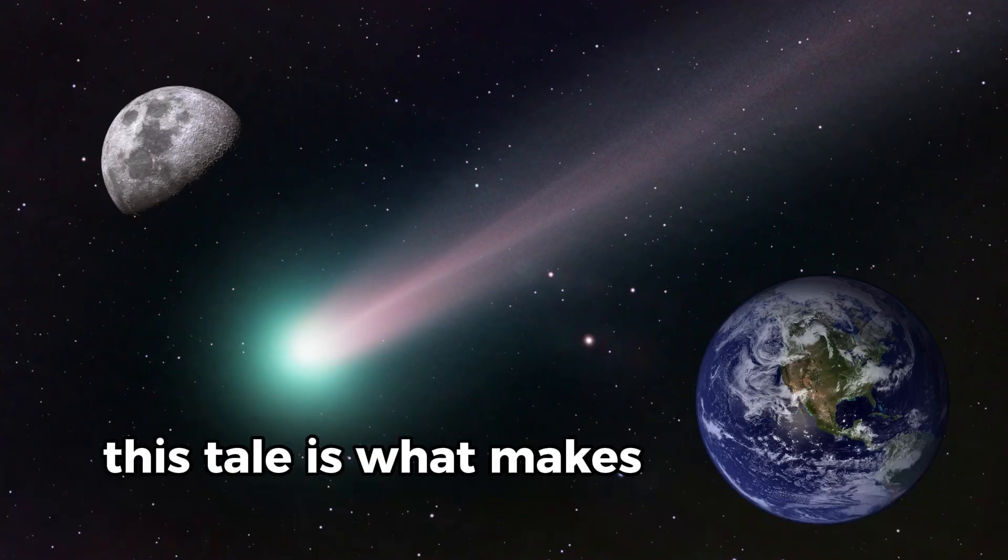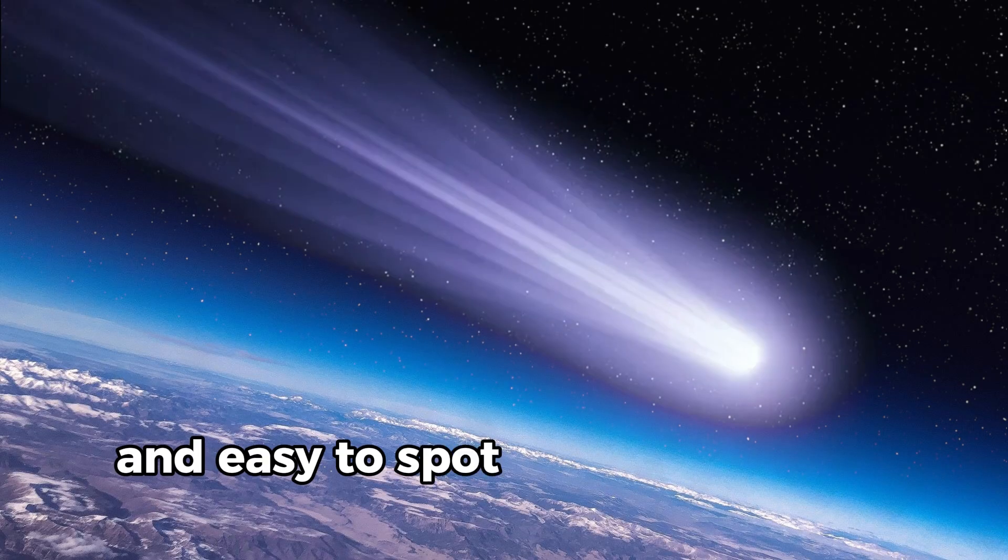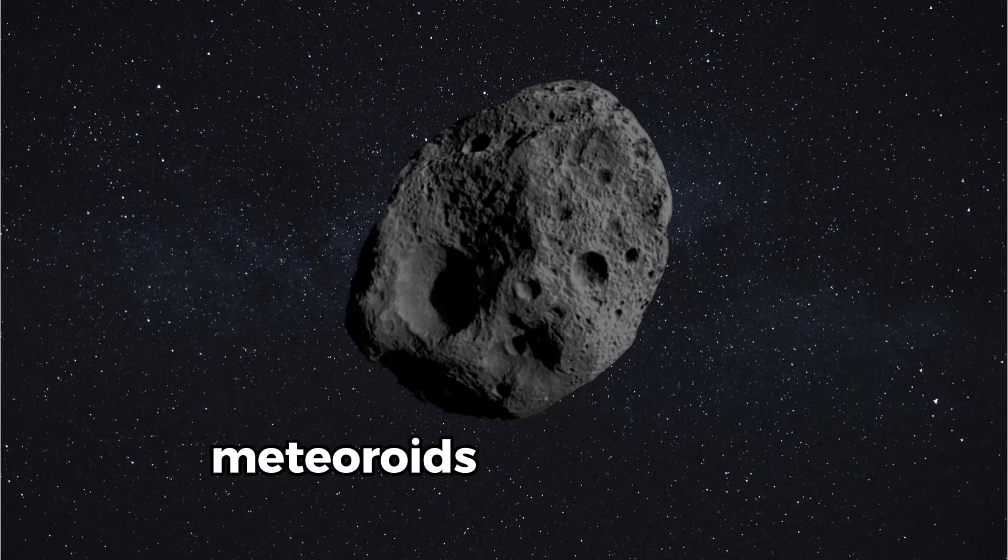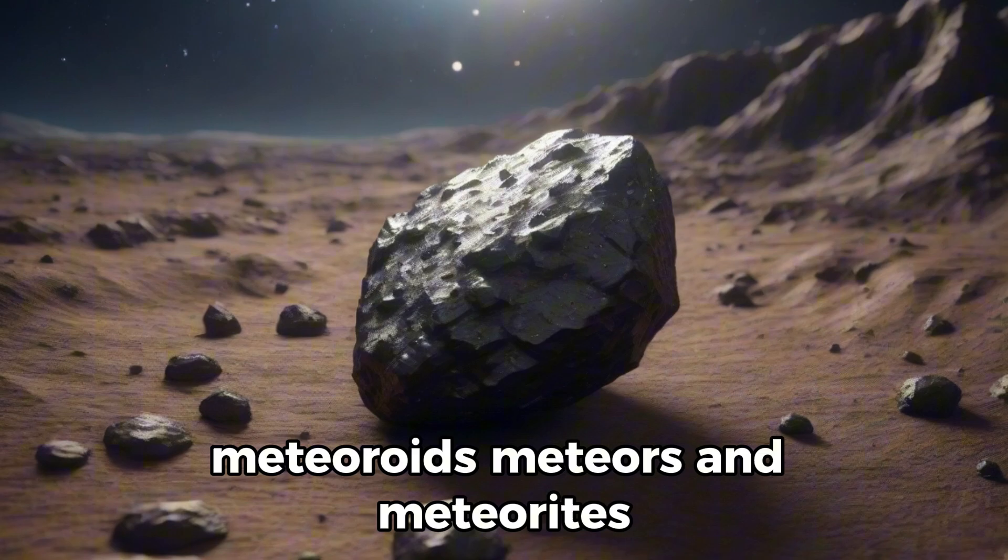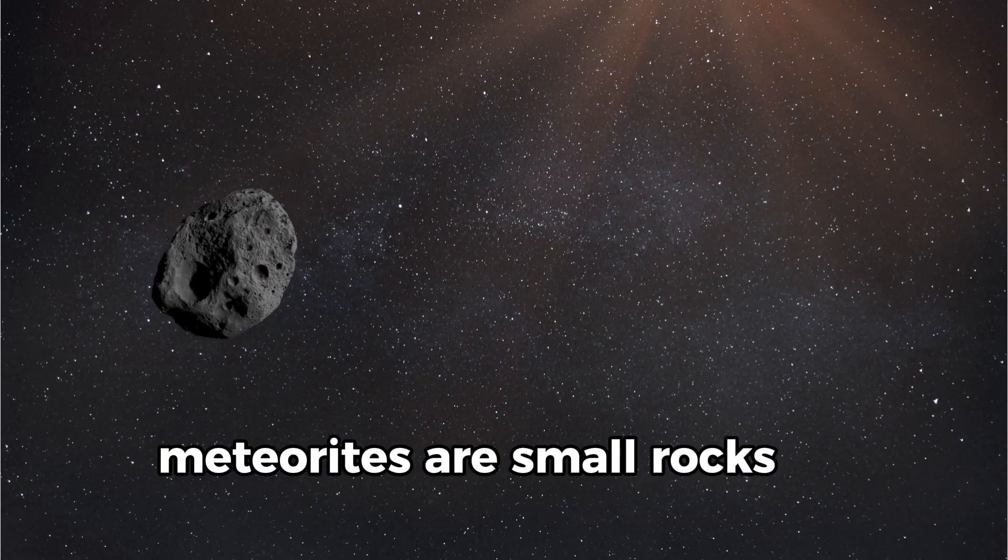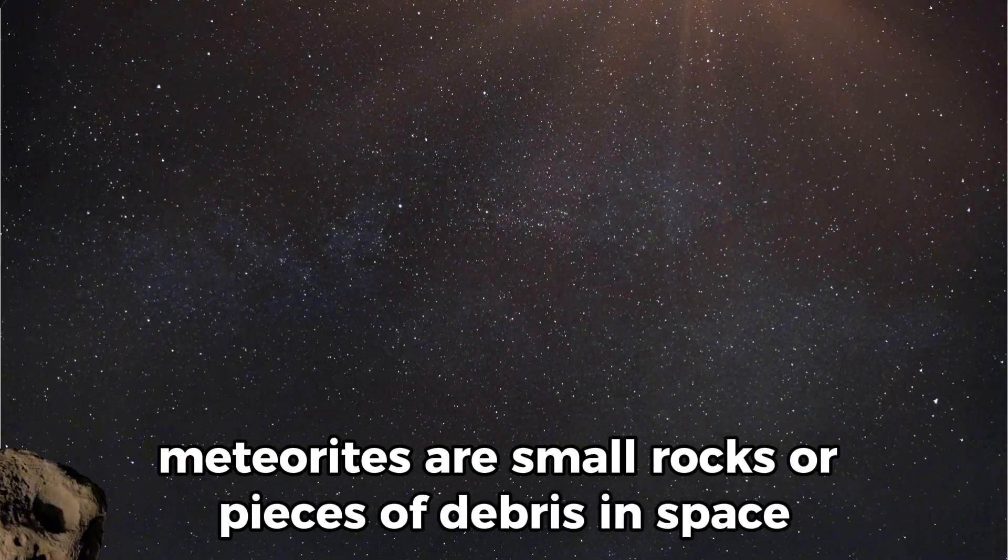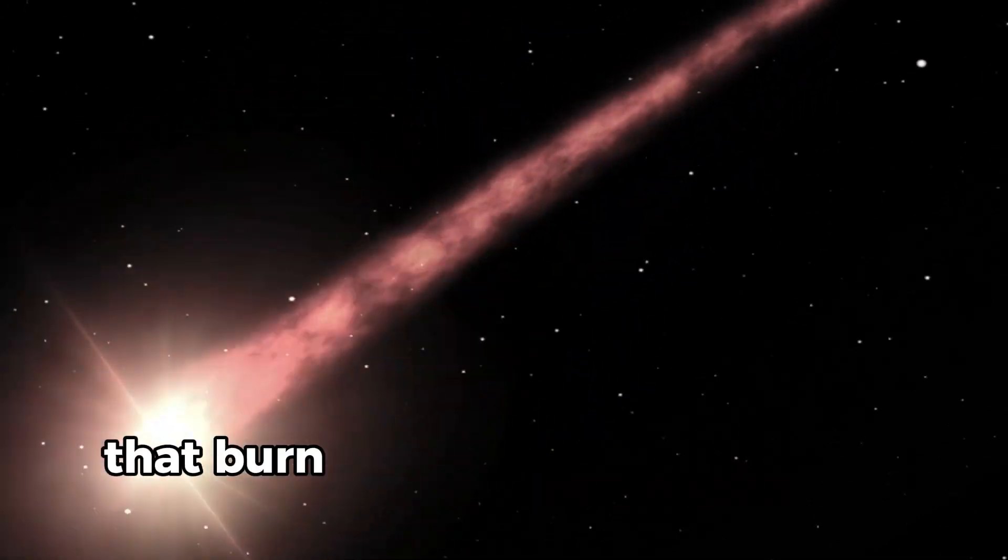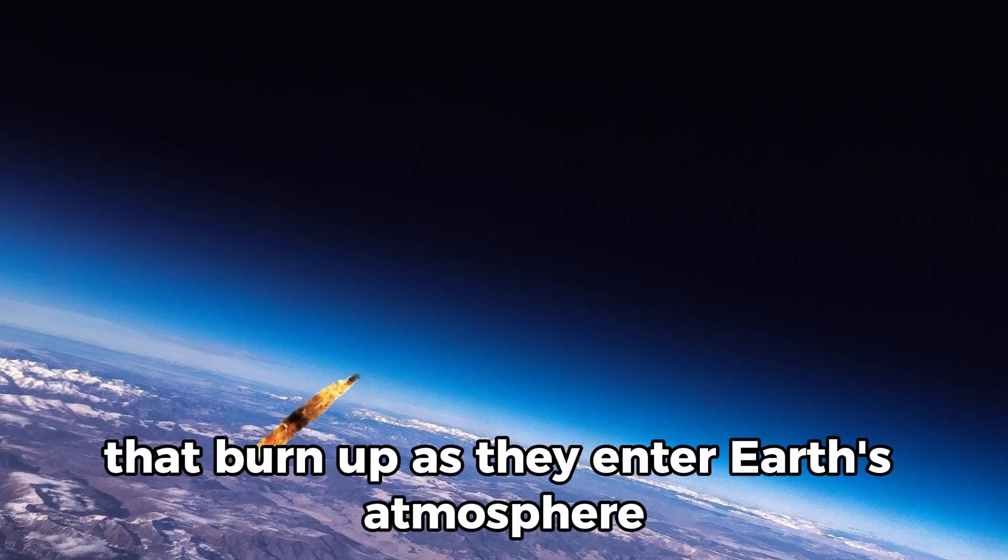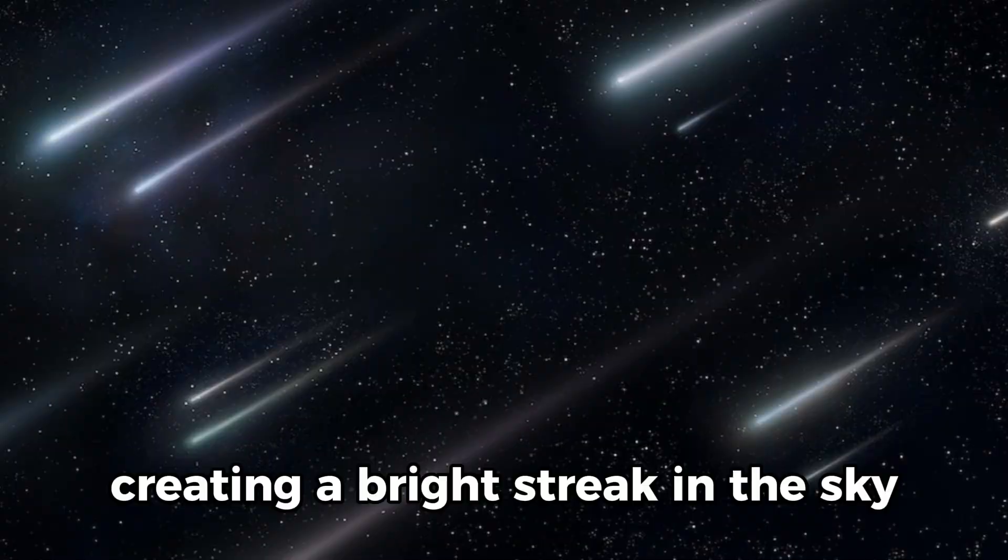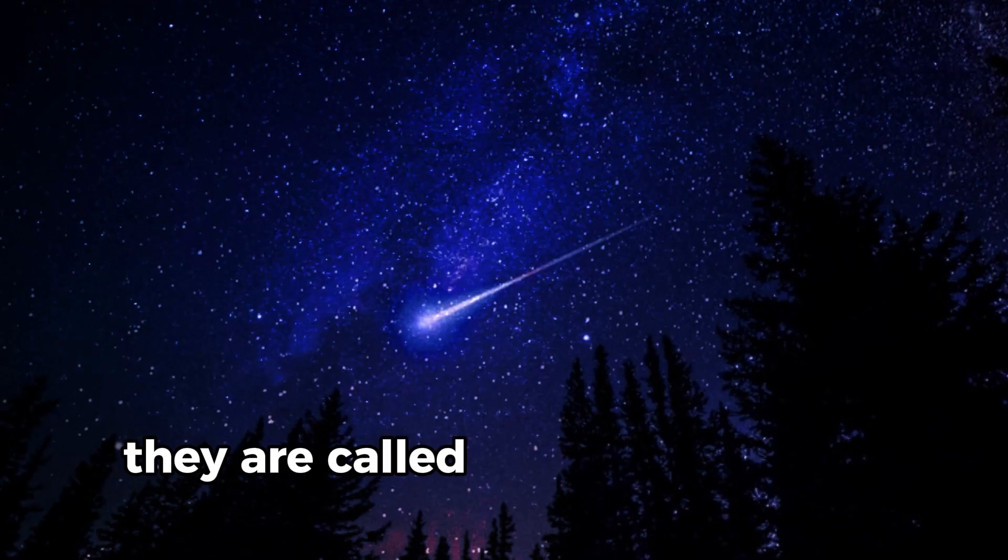Meteoroids are small rocks or pieces of debris in space. Meteors are meteoroids that burn up as they enter Earth's atmosphere, creating a bright streak in the sky. In common language they are called shooting stars. Meteorites are meteors that survive their trip through the atmosphere and land on Earth.